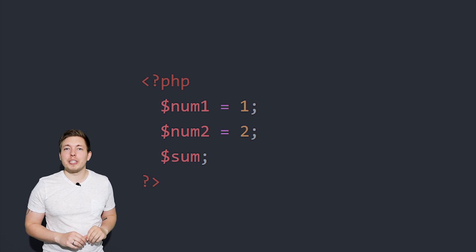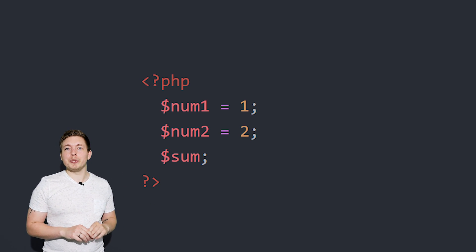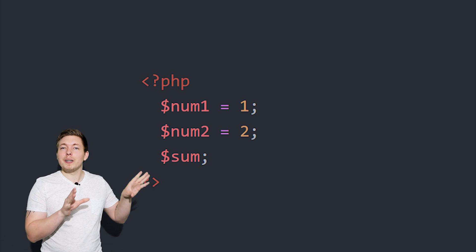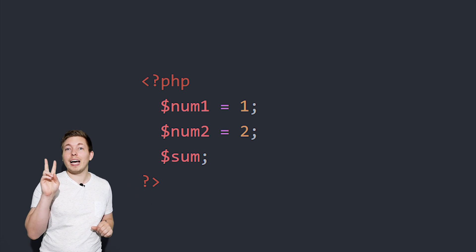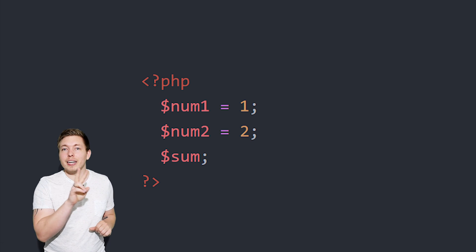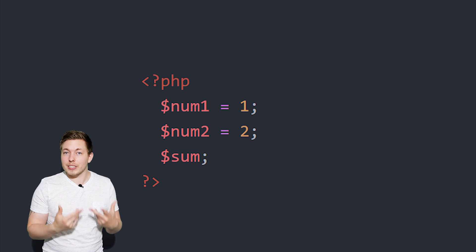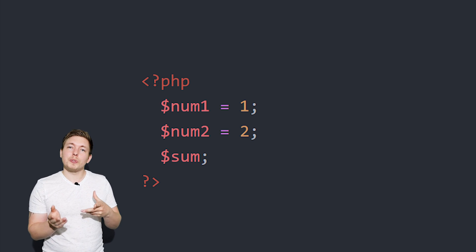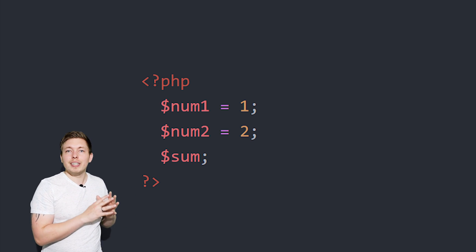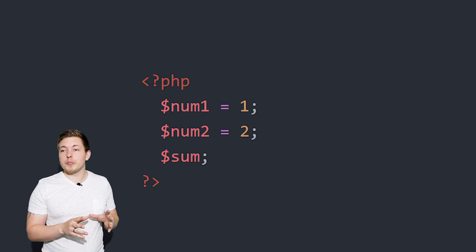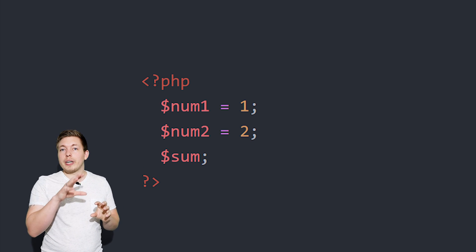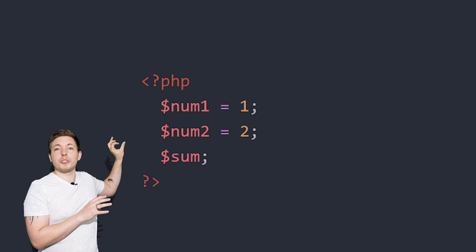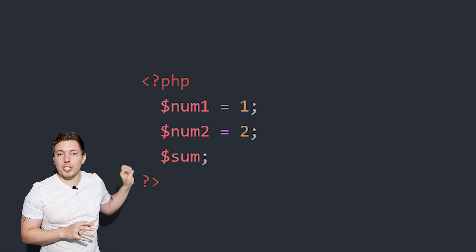Before we start talking about the operators, let's go and declare a few variables that we're going to use together with these operators. We have three different variables: two that have a number assigned to them, and one that we just declare because we don't have a value for it yet. The essential idea is that we're going to use the sum variable in order to calculate the other two together and assign the result to sum.